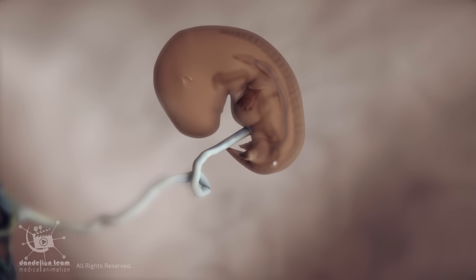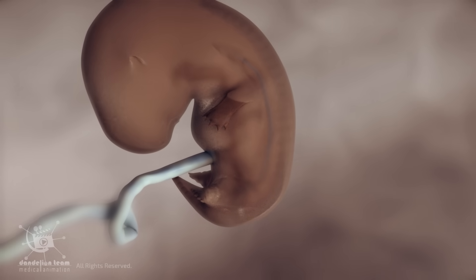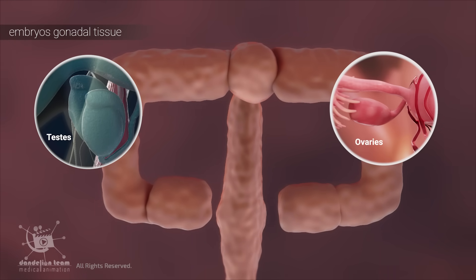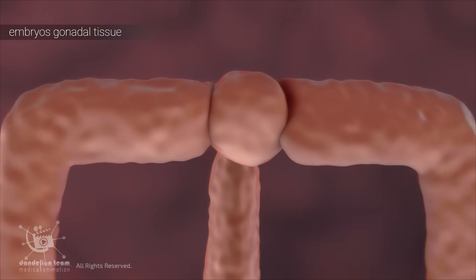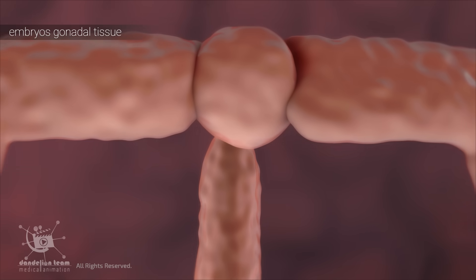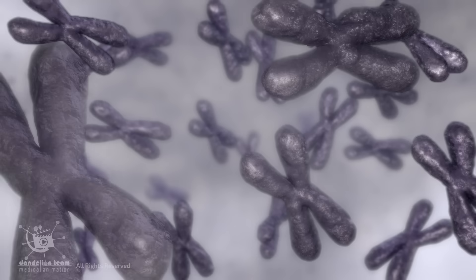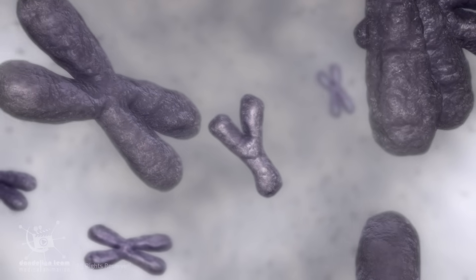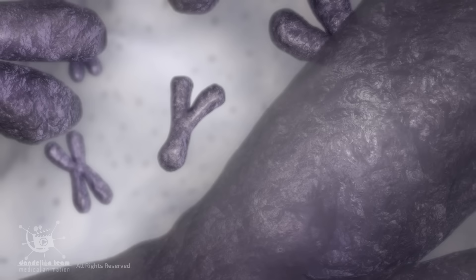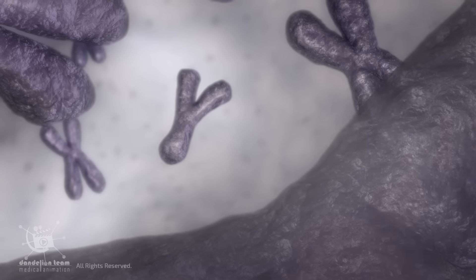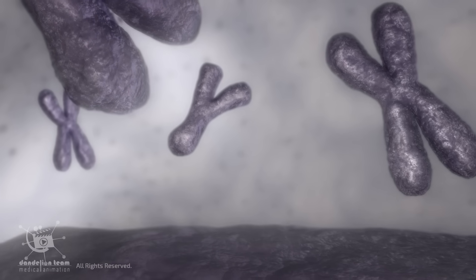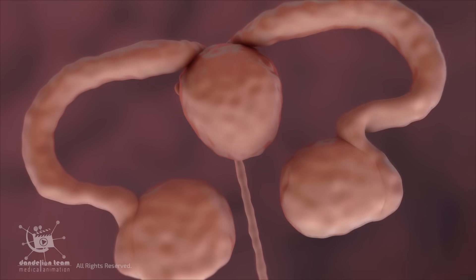In the early stages of embryonic development, both male and female embryos possess a gonadal tissue that has the potential to develop into either testes or ovaries. The fate of this undifferentiated gonadal tissue is determined by the presence or absence of certain genetic signals, particularly those associated with the Y chromosome. If the embryo carries a Y chromosome and other genes necessary for sexual differentiation, indicating a male, the undifferentiated gonadal tissue develops into testes.